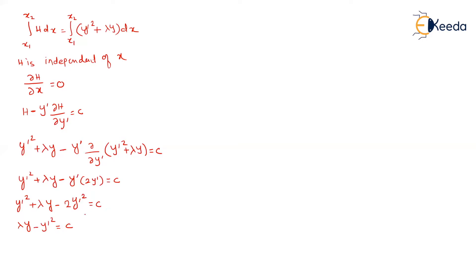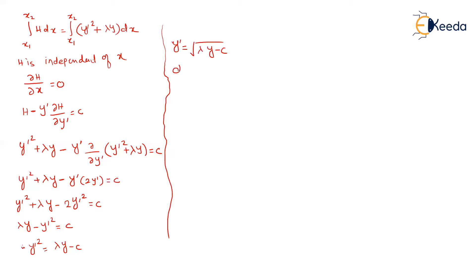Our aim is to get the value of y. I want y-dash on the left-hand side. So y-dash squared equals lambda y minus c. Now dy/dx equals the square root of lambda y minus c. Since the right-hand side also contains y, we cannot directly integrate. We use variable separable method. So dy divided by root of lambda y minus c equals dx.